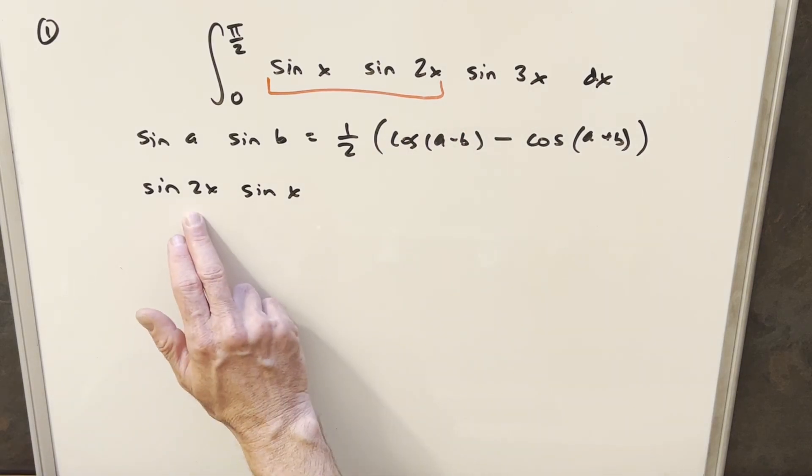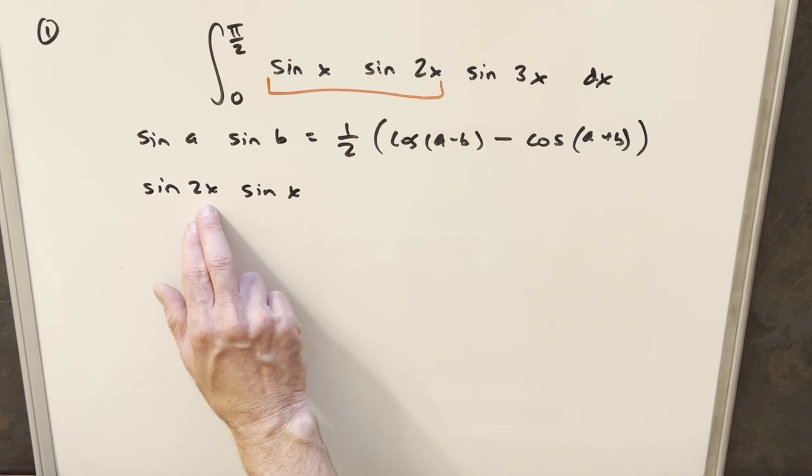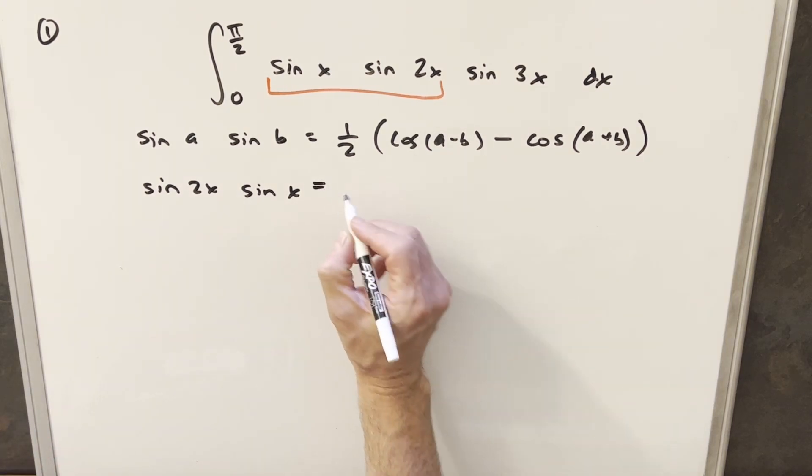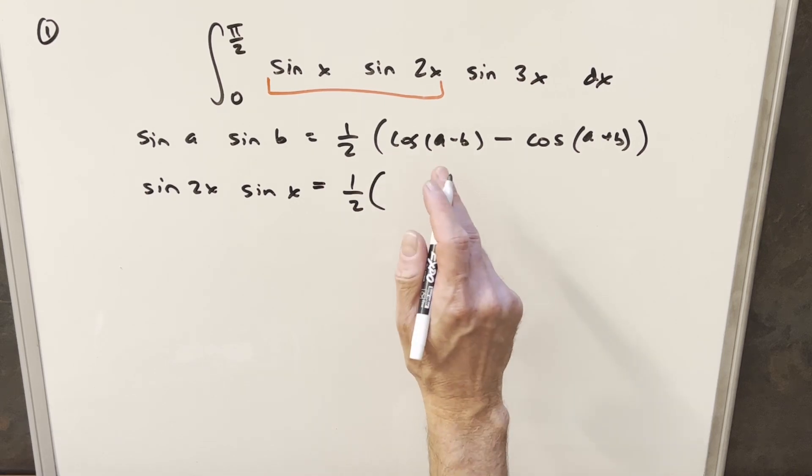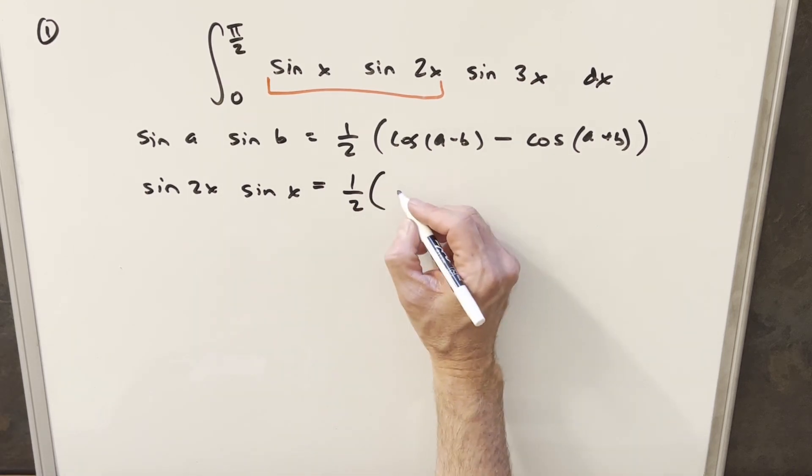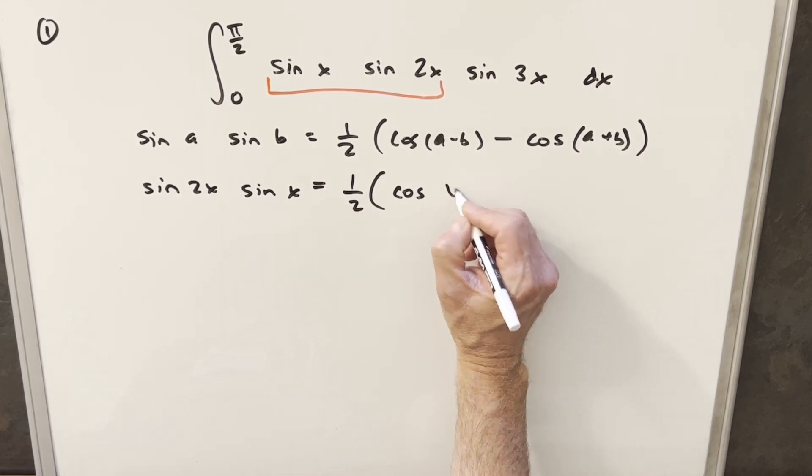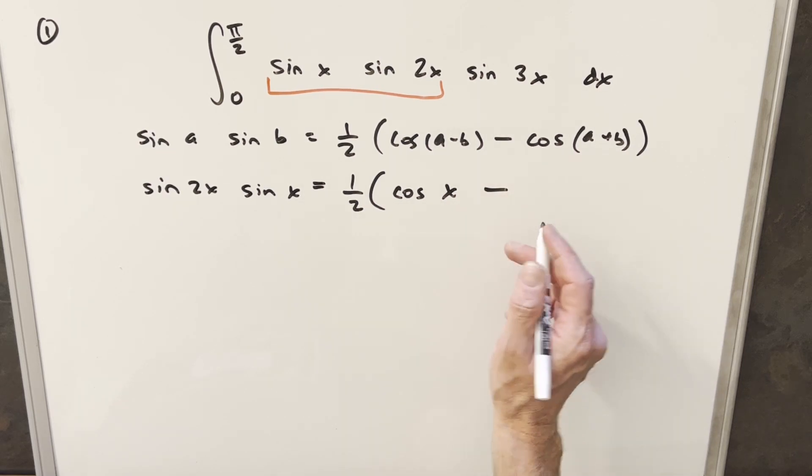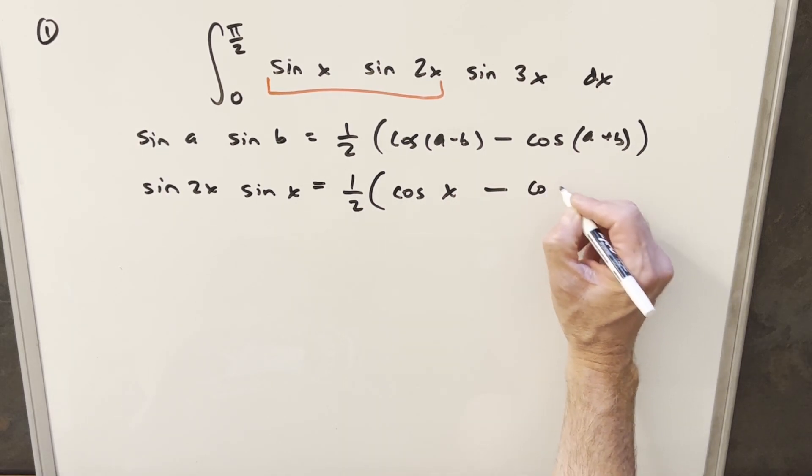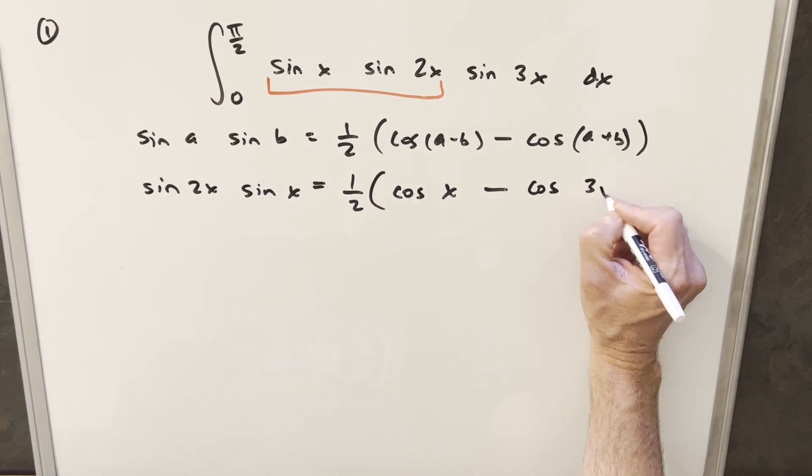So using this formula on sine 2x times sine x, our a value is just going to be 2x, our b value is just going to be x. So let's just fill this in. So we're going to have 1 half cosine of a minus b, 2x minus x. We're just going to have a cosine of x here minus the sum of the angles, minus cosine of the sum of the angles, just going to be cosine of 3x.